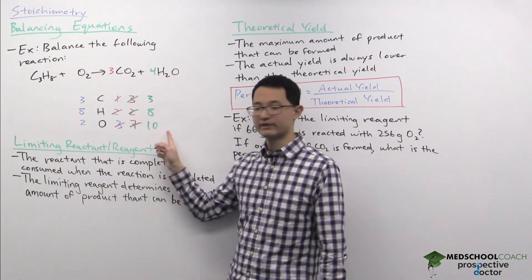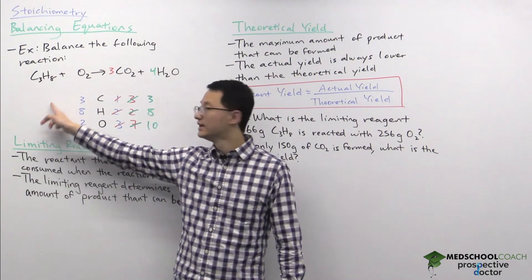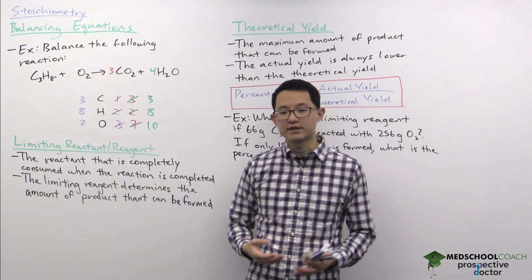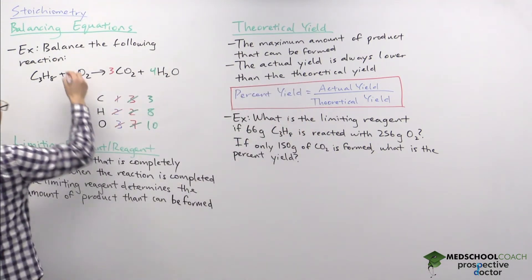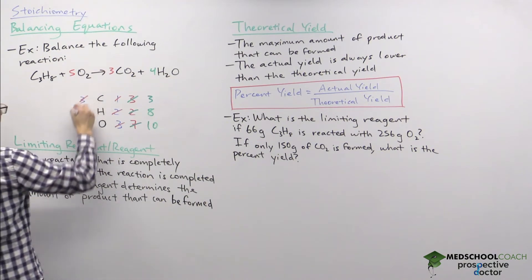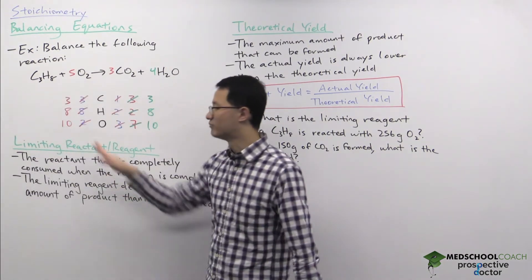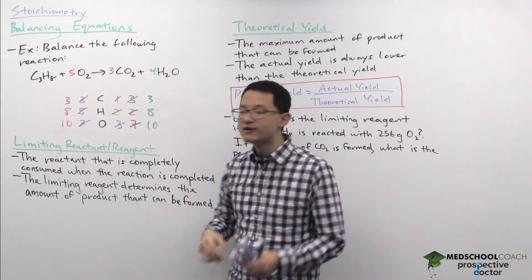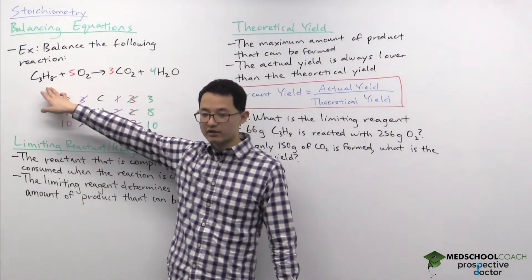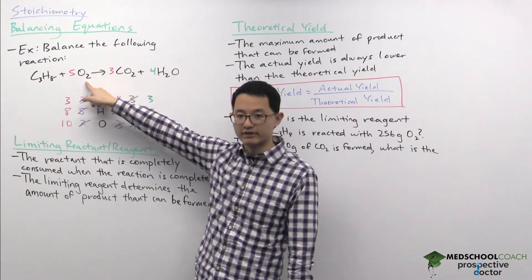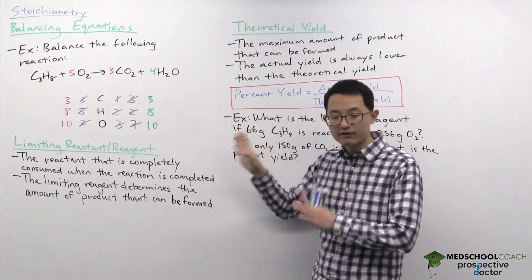Finally, the last element to balance is oxygen. We have two oxygen atoms on the left and ten on the right, so we need to add oxygen atoms to the left side. Oxygen is O₂, which has two oxygen atoms per molecule. So if we want ten oxygen atoms on the left, we need five O₂ molecules. Now both sides have three carbons, eight hydrogens, and ten oxygens — the equation is balanced. For every molecule of propane, we need five molecules of oxygen, forming three molecules of CO₂ and four molecules of water.